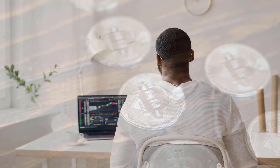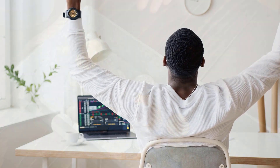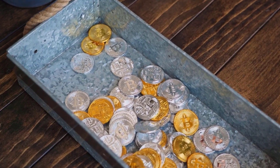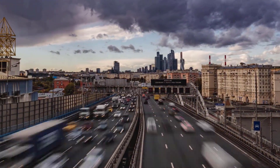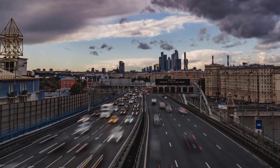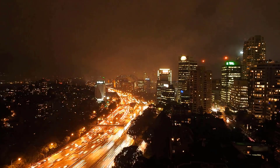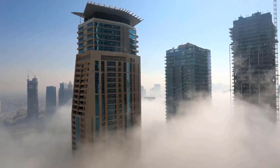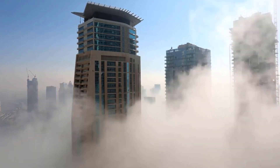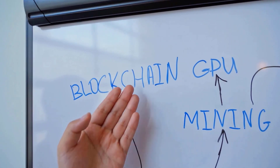1inch price forecast for 2024: It is predicted that 1inch would dominate the crypto realm with a price fixed at $5.10. This is comparable to what was anticipated at the end of 2021, which shows 1inch has the potential to sustain and grow even in unfavorable circumstances compared to other cryptocurrencies like BTC and ETH.